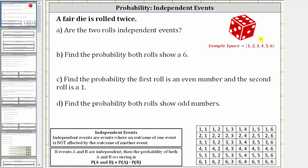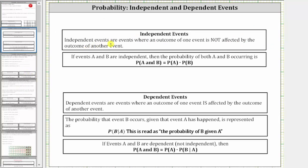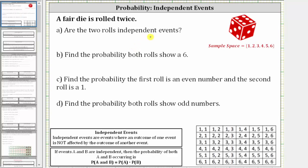But again, we are told to roll a fair die twice, and the first question is: are the two rolls independent events? Independent events are events where an outcome of one event is not affected by the outcome of another, and dependent events are where an outcome is affected by another. In our case, the outcome of the second roll is not affected by the outcome of the first roll, and therefore the two rolls are independent events — so we answer yes for part A.